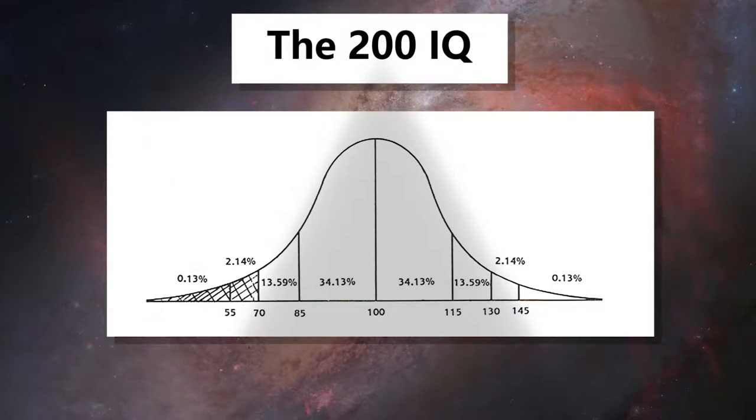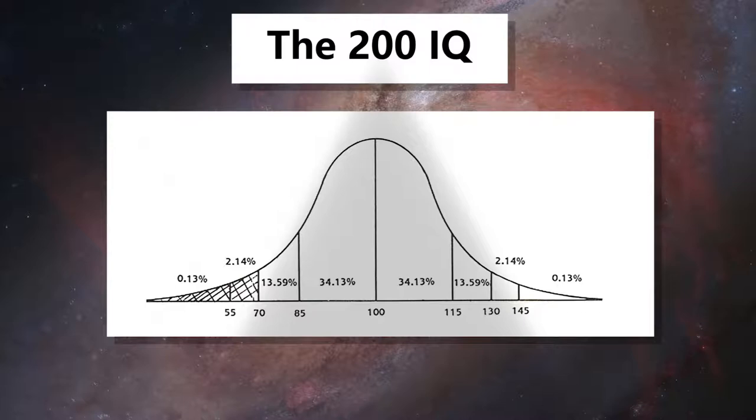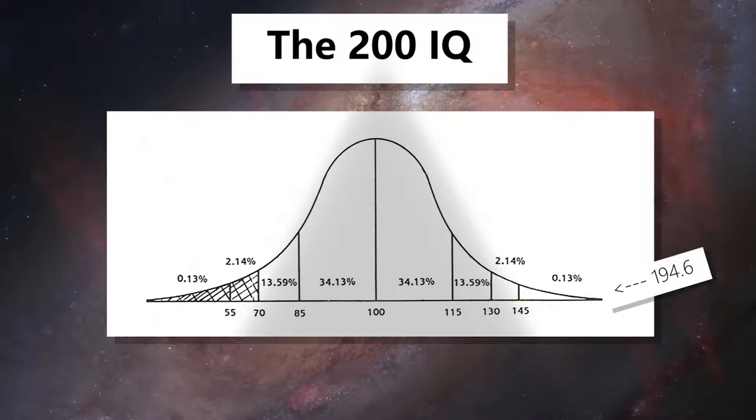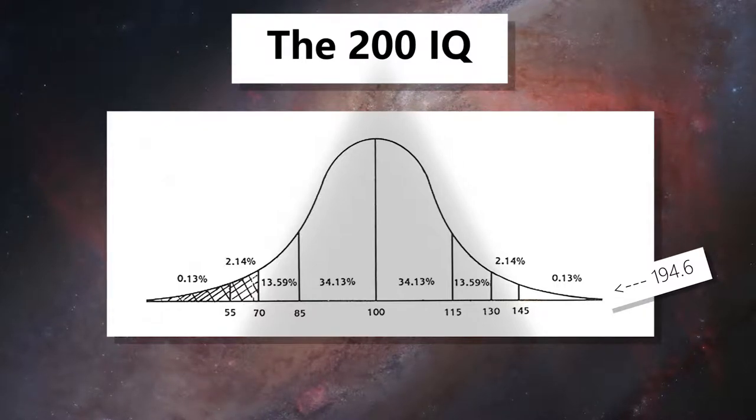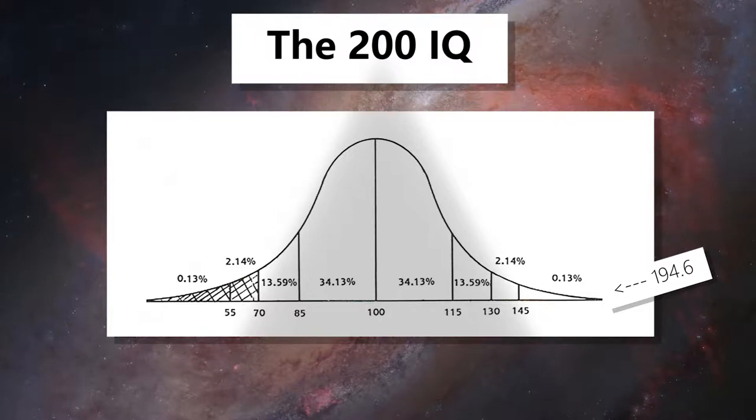If you look closely at the IQ bell curve, you'll notice that the amount of people scoring higher and lower gets progressively fewer, almost reaching zero as they move down the line. When calculated, the highest amount of IQ that can be deemed significant enough to be plausible by the bell curve is around 194.6. Which means that theoretically, it's actually technically impossible for humans to achieve 200 IQ.